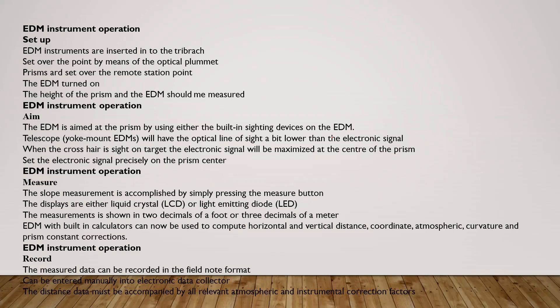EDM calculations are performed using the built-in calculator to calculate horizontal and vertical distance, coordinates, atmosphere correction, curve height, prism constant correction. We can record the measured data in the field note format and record electronic data in the manual.